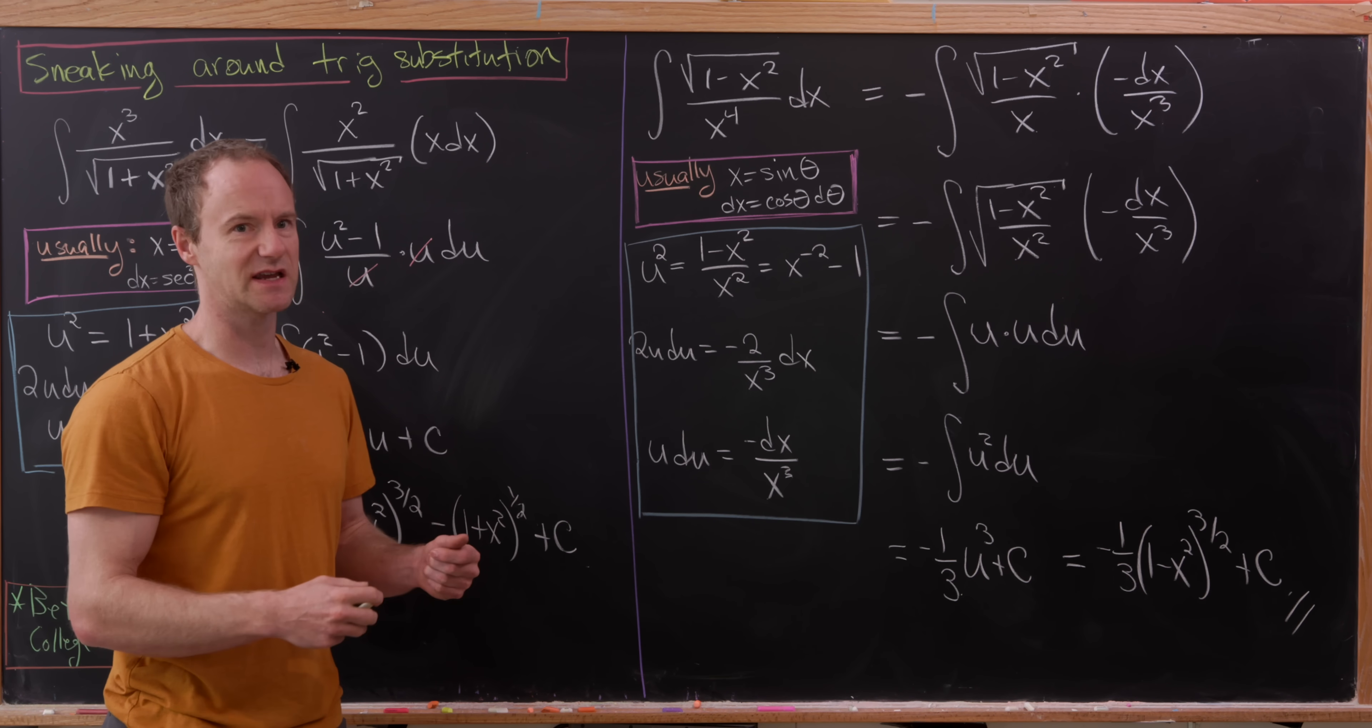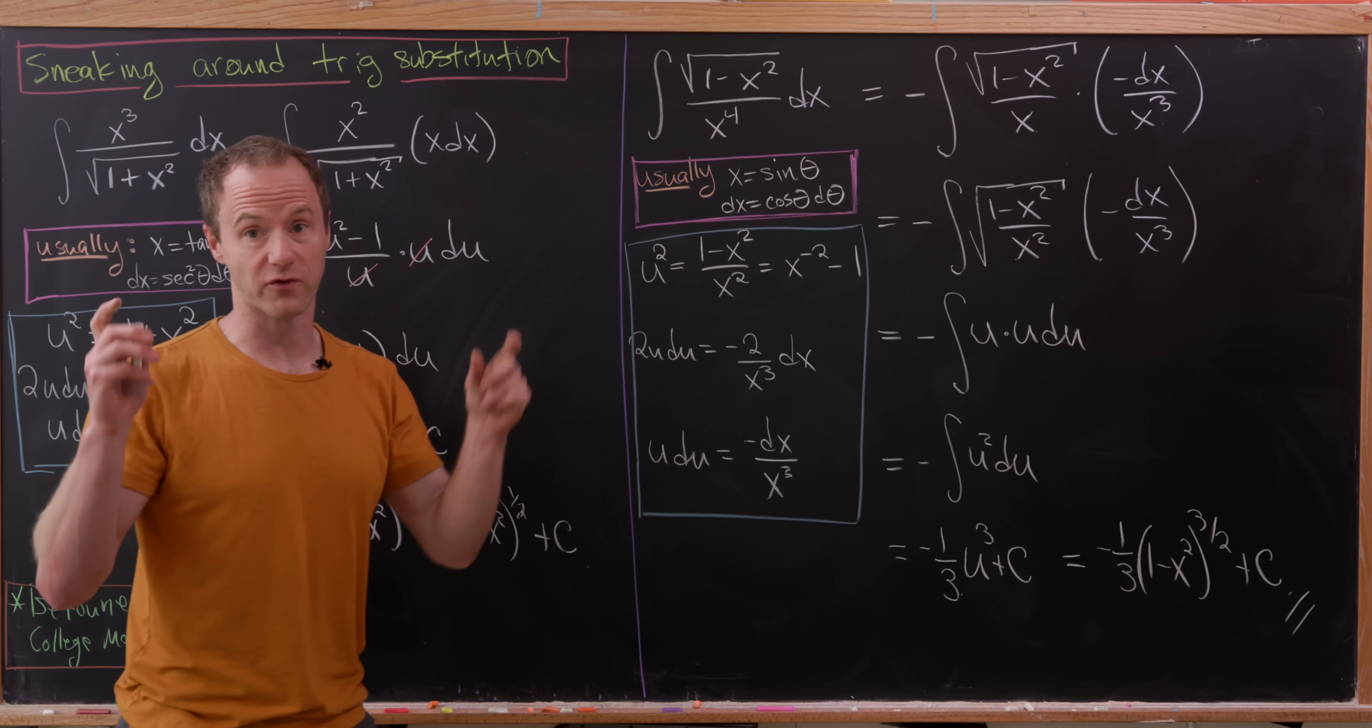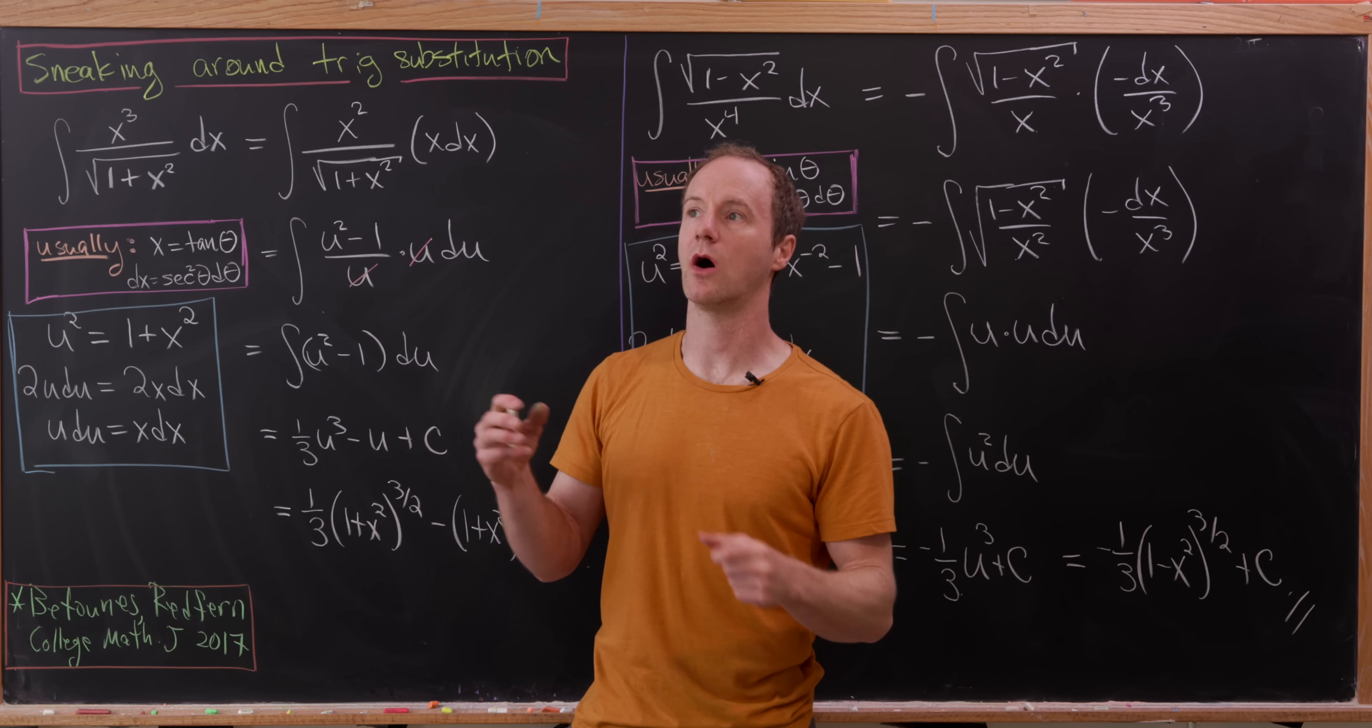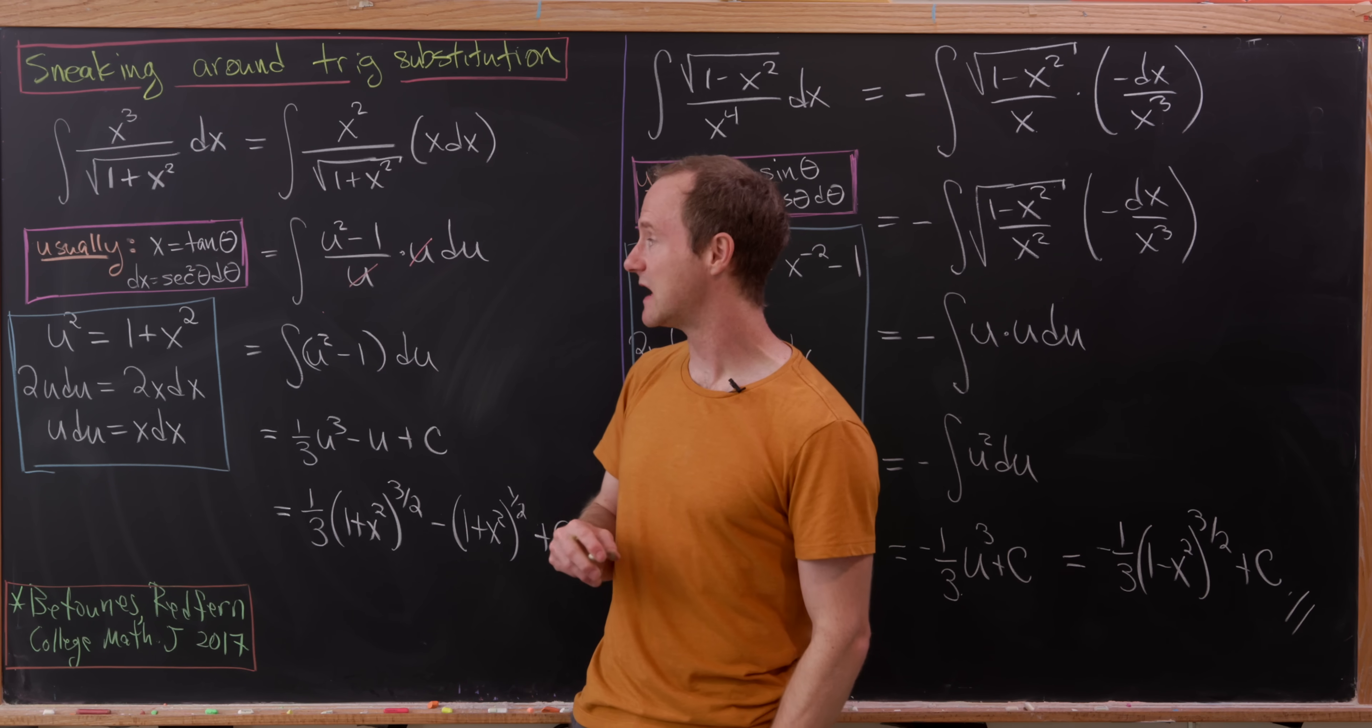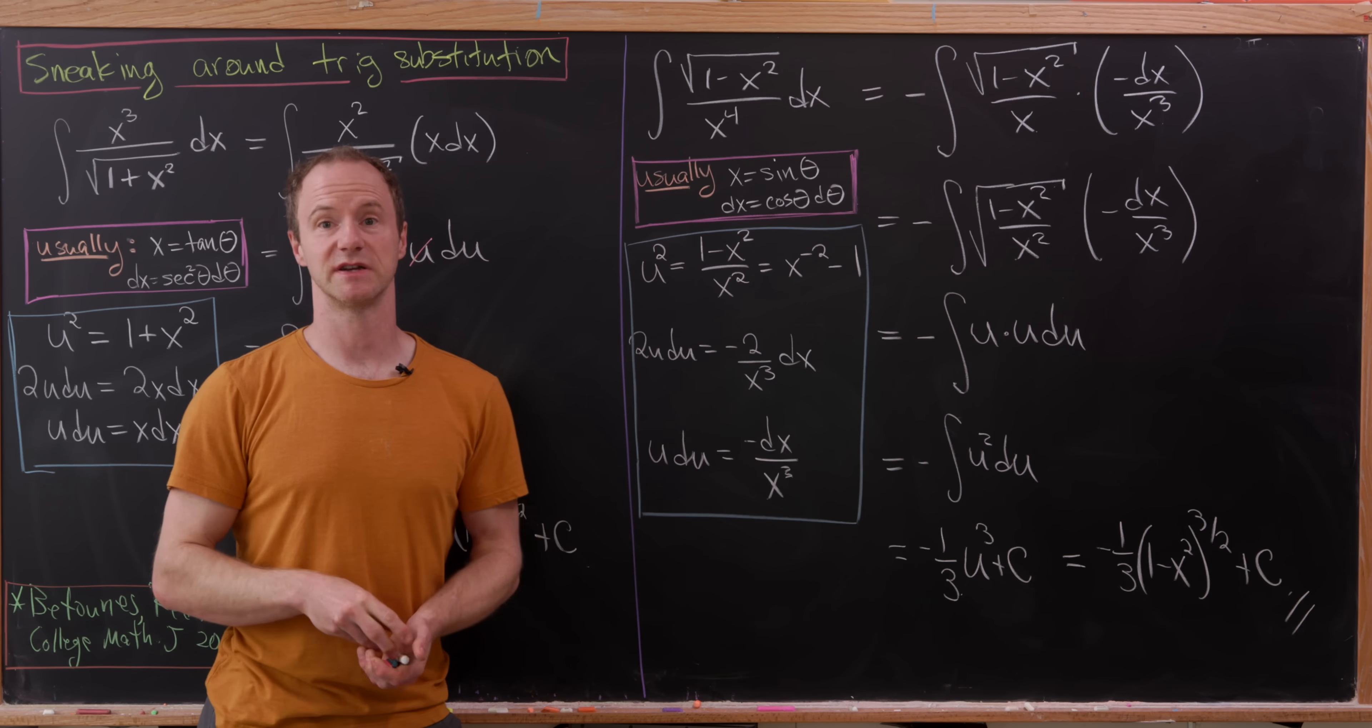And the fact is, this kind of thing works any time you have a setup that you would usually do trig substitution where the kind of free x is x to an even power. Whereas, our original type of substitution works any time you would originally do a trig substitution. But now you have x to an odd power. Of course, you're going to need to tweak something here and there depending on if you've got a number that's not equal to 1 right here inside of the radical. And that's a good place to stop.